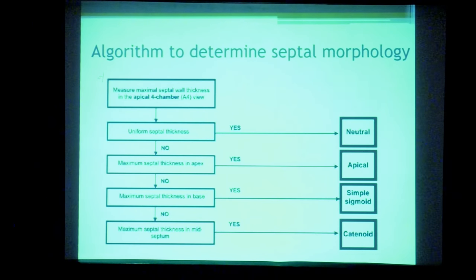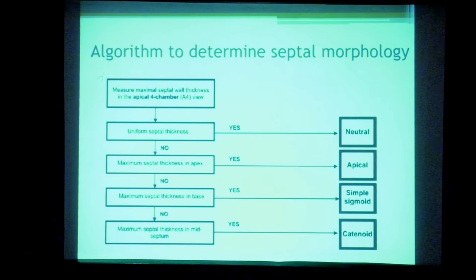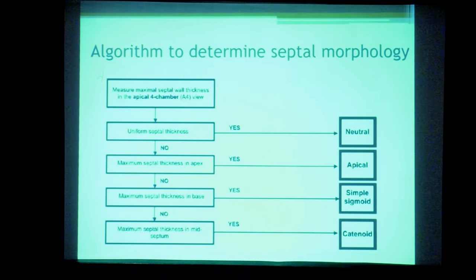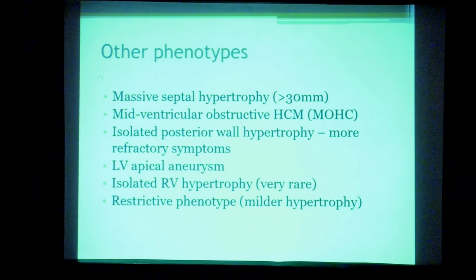If the maximum septal thickness is uniform throughout the apical four-chamber view, it is a neutral septum. If confined to the apex, it is apical hypertrophy. If maximum near the base, it is a sigmoid septum. If maximum toward the mid-portion bulging into the cavity, it is a catenoid septum. Apart from these, rarer phenotypes include massive septal hypertrophy (>30 mm), mid-ventricular HCM, isolated hypertrophy of the posterior wall, LV apical aneurysms, isolated RV involvement, and a restrictive phenotype mimicking restrictive cardiomyopathy.